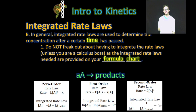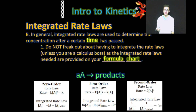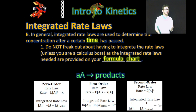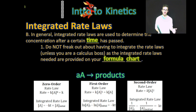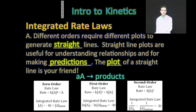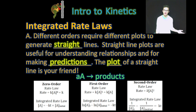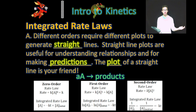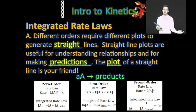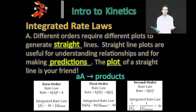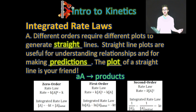Simply recognize that you're provided with the integrated rate laws on your formula chart, and you can use those to, for example, determine the concentration after a certain time has passed. With the rate laws, our focus was on how concentrations affect the rate. With the integrated rate laws, we're looking at concentrations and times. Different orders require different plots to generate straight lines, and straight line plots are really important for understanding the relationship between concentration and time, but also for making predictions.